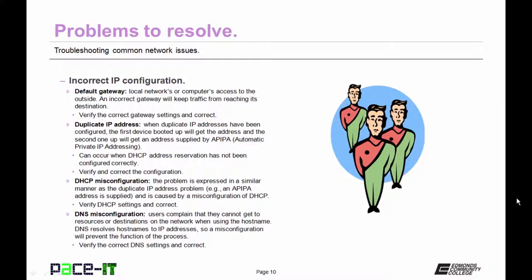Then there are duplicate IP addresses. When duplicate IP addresses have been configured, the first device booted up will get the address, and the second one that gets booted up will get an address supplied by APIPA. This can occur when DHCP address reservations have not been configured correctly. This is easy to verify and correct and should be done when an APIPA address is received by a device.